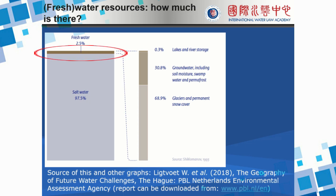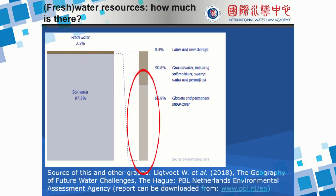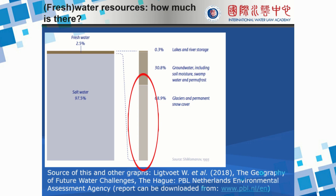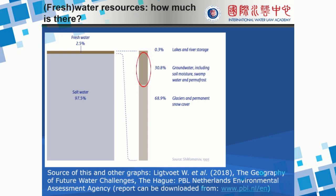So only a tiny fraction of the world's water is governed by international water law. And of that tiny proportion, the majority — about 70% — exists in the shape of glaciers or permanent snow cover, in solidified frozen form. Only about 30% of the 3% of the world's fresh water exists in liquid form, and the majority of that liquid fresh water is situated underground in aquifers. So only about 0.5% of the world's water is found in the rivers and lakes we normally associate with international water law.